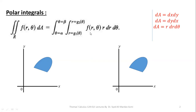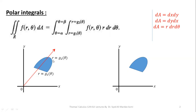Since r is our inner variable, the limits of the inner variable may be constant or variable, but the limits of the outer variable are always constant. In order to calculate limits of r, we will use the arrow technique and pass an arrow through our region. In polar coordinates, our arrow starts from the origin. The boundary through which the arrow enters our region gives the lower limit of r — r equals g1(theta) — and exits gives the upper limit — r equals g2(theta). So limits of r are g1(theta) to g2(theta).